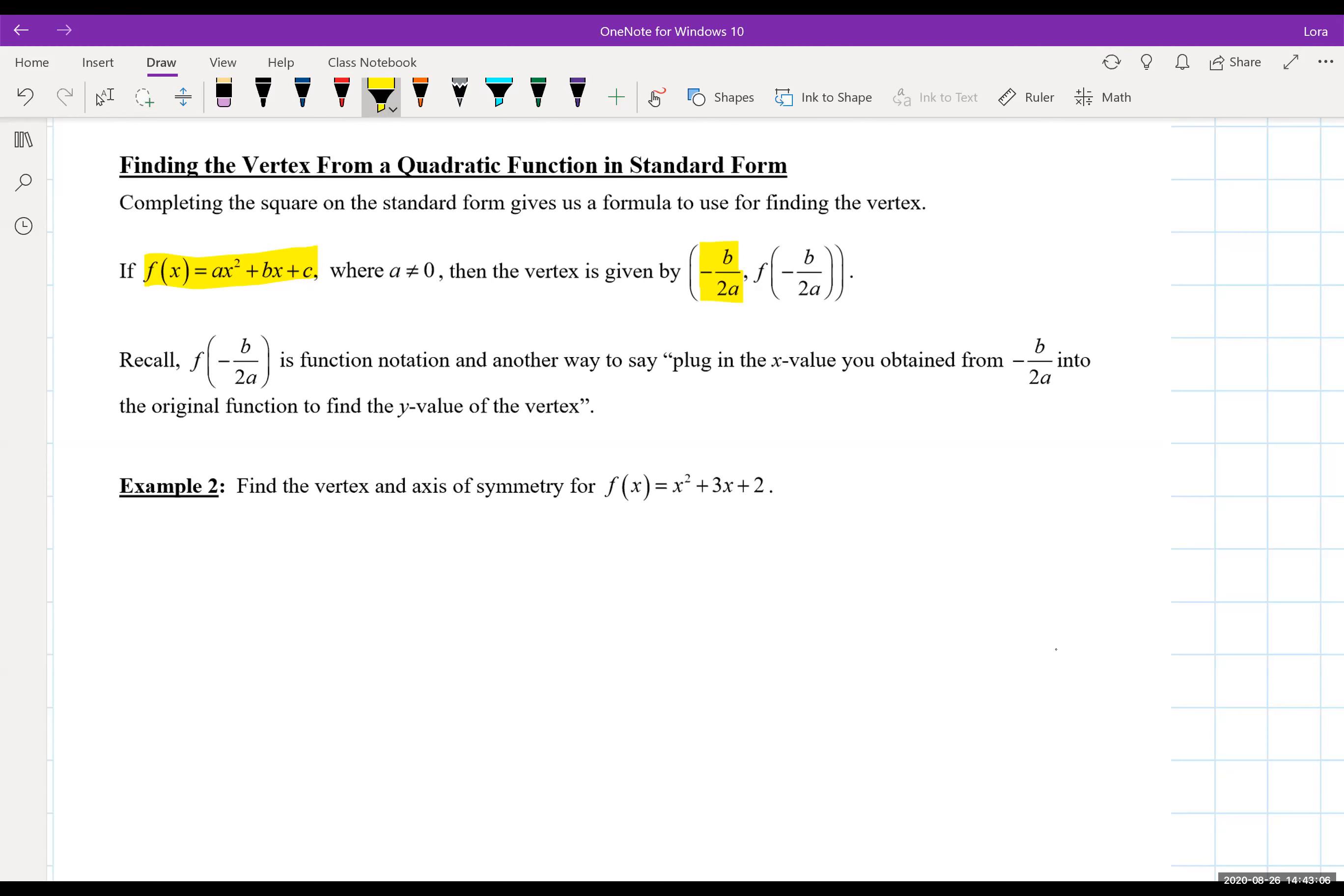So if you do know the x value of the vertex you can plug it into the function and find the y value and that's what we're talking about with f of negative b over 2a. So x value and y value.